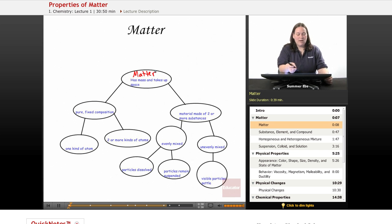So there's matter that has a pure fixed composition, and there's matter that is a material made of two or more substances. So it's not pure. So let's start with the pure matter.